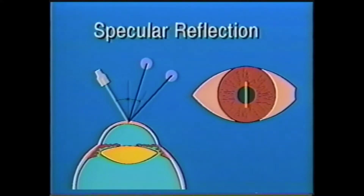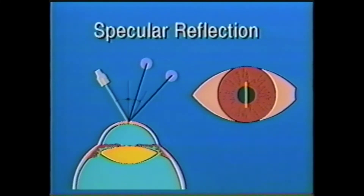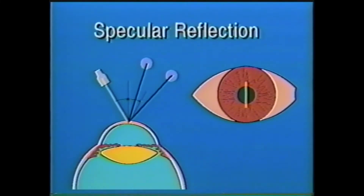Fifth, specular reflection. This reveals details that are seen when the reflected light is viewed at the same angle from the perpendicular as the angle of incidence of the slit beam light. This type of illumination is ideal for examining the corneal endothelium.